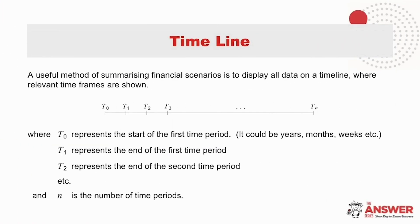Let's have a look now at how to create a timeline. First, we place the time periods on a line starting with T0 to represent the start of a time period. A time period could be, for example, years or months or weeks and we take our lead from the information given in the question. T1 would then indicate the end of the first time period, T2 the end of the second time period and so on up until Tn which will indicate the end of the time periods. The best way to illustrate the effectiveness of using timelines is by looking at examples.